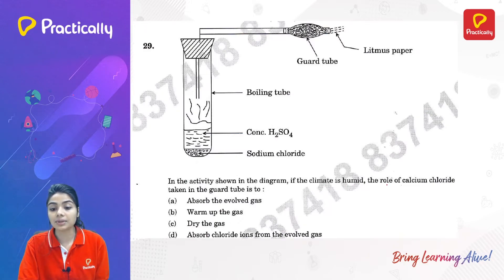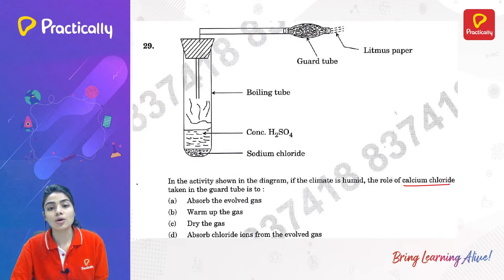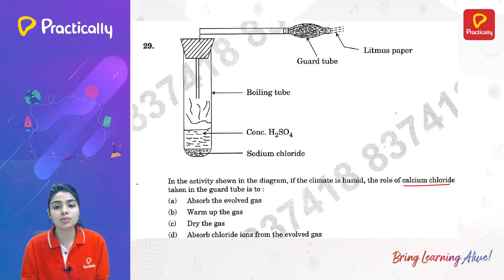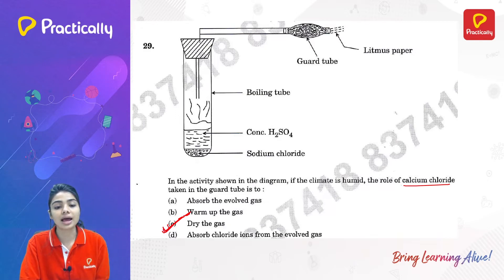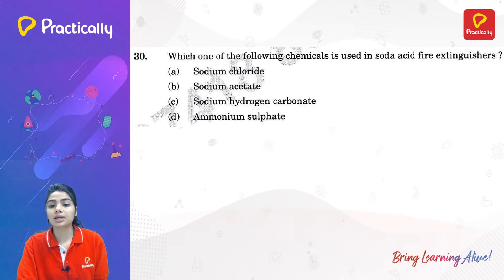In the activity shown in the diagram, if the climate is humid, the role of calcium chloride taken in the guard tube is to dry the gas. Calcium chloride is a very good absorber of water vapor; it absorbs moisture from the air, thereby drying the gas. So option C is the correct answer.